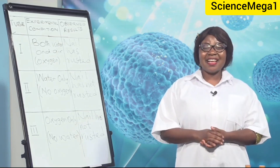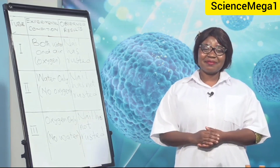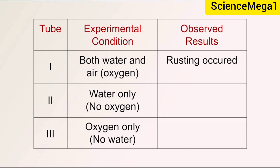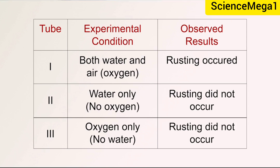Let us now analyze our results. From the table of results, we can deduce that both water and oxygen are needed for rusting to occur. Without oxygen, rusting does not occur — water alone is not sufficient. Without water, rusting does not occur — oxygen alone is also not sufficient for rusting to take place.